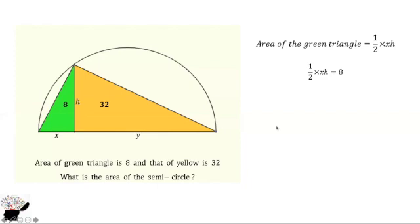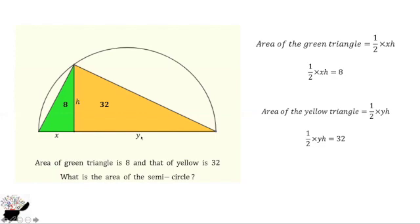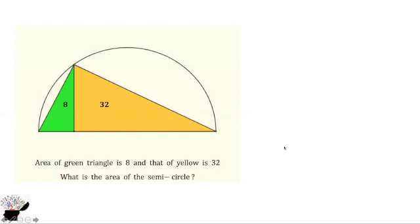Now let's consider the yellow triangle. The area is half base times height. The base of the yellow triangle is Y, so we get half Y times H, which equals 32. Now we have 8 and 32. Since both triangles share the same height, we can divide the two equations to find the ratio X divided by Y equals 1 over 4.